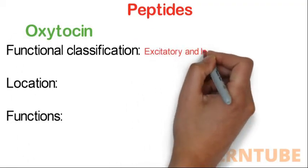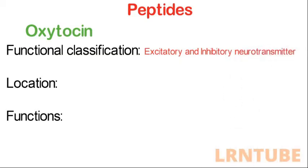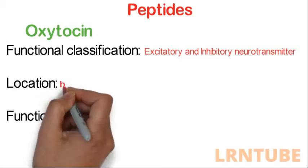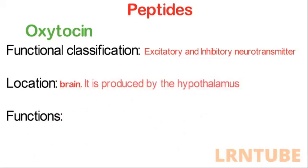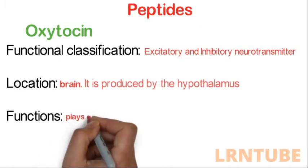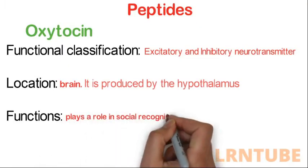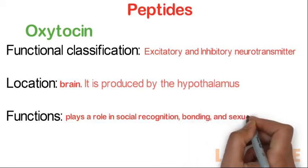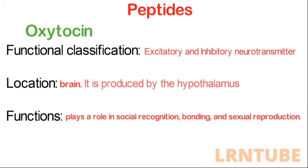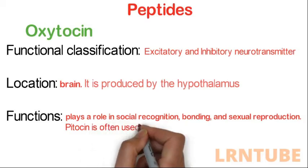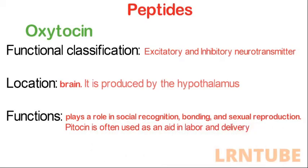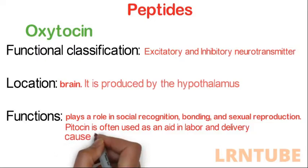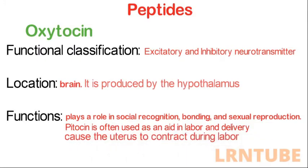Under peptides, we have oxytocin and endorphins. Oxytocin is both an excitatory and inhibitory neurotransmitter. This powerful hormone acts as a neurotransmitter in the brain and is produced by the hypothalamus. It plays a role in social recognition, bonding, and sexual reproduction. Synthetic oxytocin, such as pitocin, is often used as an aid in labor and delivery, causing the uterus to contract.